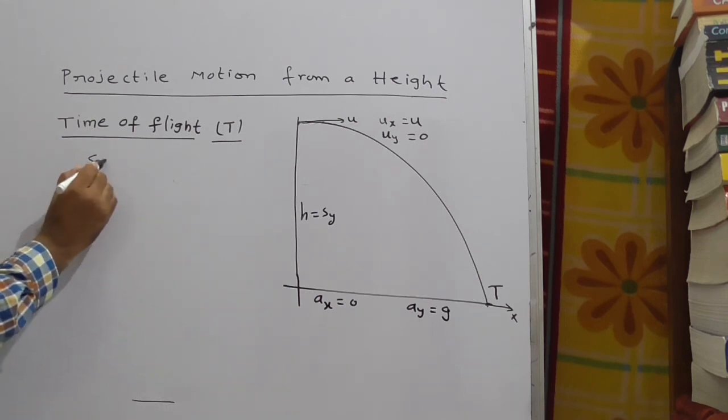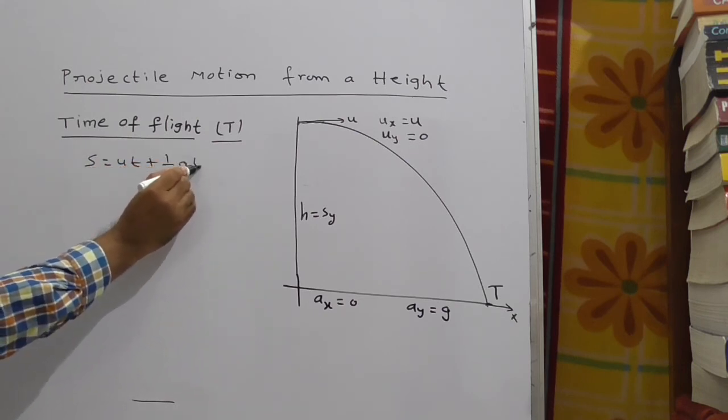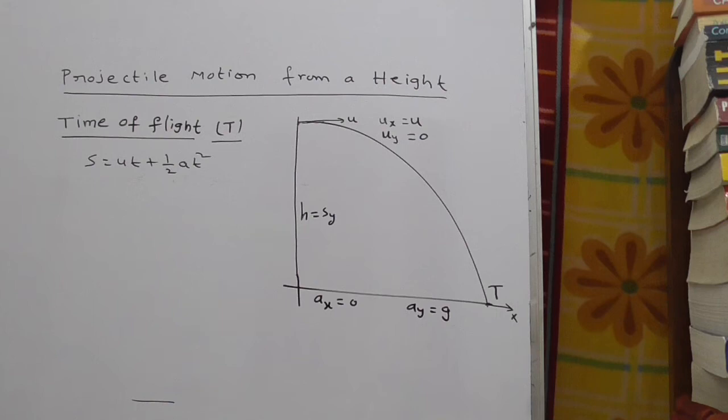Take s is equal to ut plus half a t square. To derive time of flight equation, consider vertical velocity, that is with respect to y.